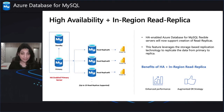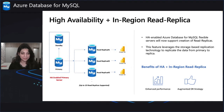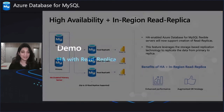Not just that, the feature will also help in enhancing performance of a primary HA-enabled server as the read workload can be routed to the Read Replica. Now with that, let's quickly look at the demo.